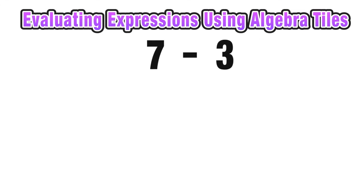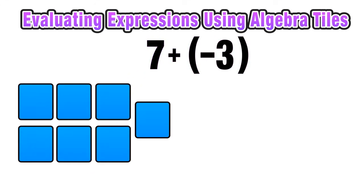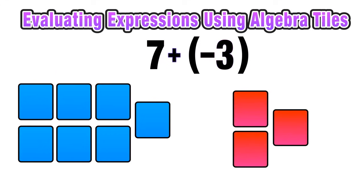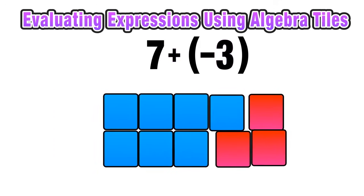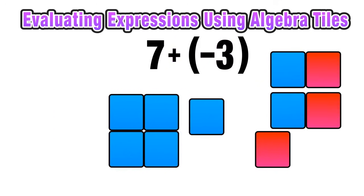So for example, if we wanted to use algebra tiles to represent 7 minus 3, we can rewrite this as 7 plus negative 3 and then model it using tiles. I'll replace positive 7 with 7 blue squares and I'll replace negative 3 with 3 red squares.